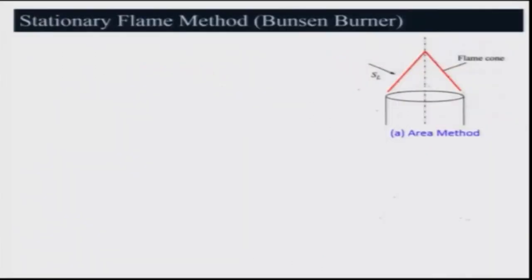Now let us look at a simpler method. We have just seen that very sophisticated methods — such as PIV or Particle Image Velocimetry — are required to measure the local burning velocity on the flame surface. However, in a laboratory we can use a very simple method for a stationary Bunsen flame, which we call the area method. We take a tube, consider the velocity profile properly so that a flame shape can be obtained.